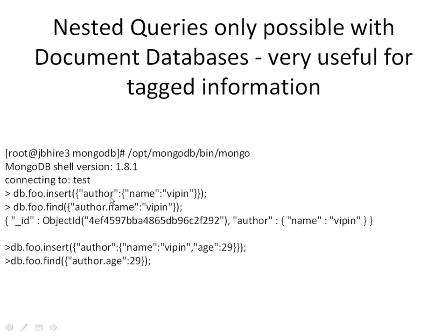Basically, the attribute can itself be a map in which it can contain name and value. Now if you look further, in the same collection you can insert like db.foo.insert where author name is 'weapon' and age is 'continent'. So at runtime you can add attributes to a column — the number of attributes you can define in a column are dynamic, which is not possible in other relational databases.